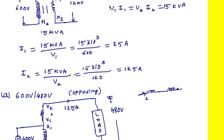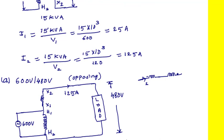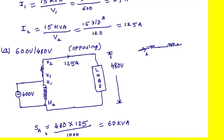The LV winding current capacity is 125 amperes, so that current can flow here. The load voltage is 480 volts as given. We know the load current and load voltage, so the kVA rating of this auto transformer is SA = 480 × 125 ÷ 1000 = 60 kVA.